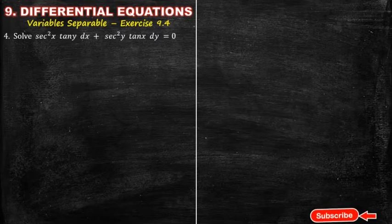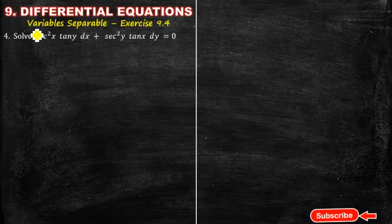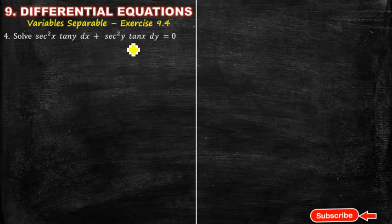Okay, so variable separable method exercise 9.4, question number 4. What is the question number 4 given problem? Solve secant squared x tan y dx plus secant squared y tan x dy equals 0. This is the data.